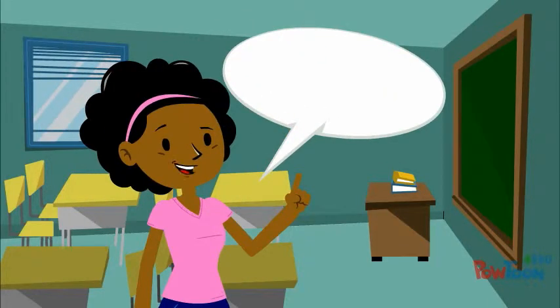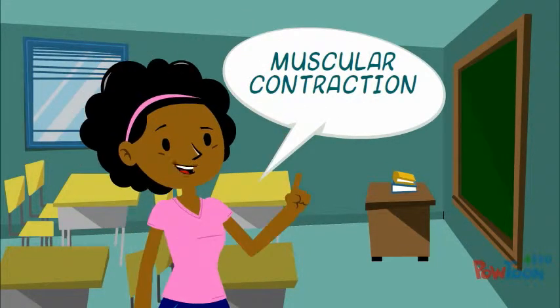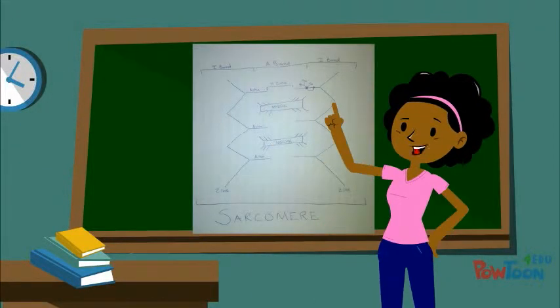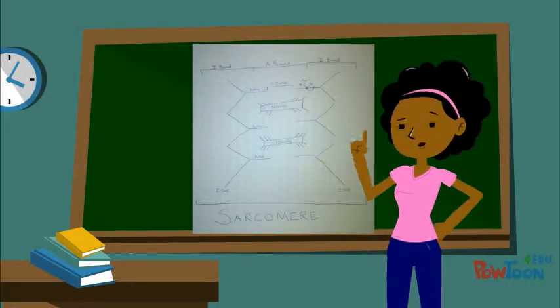Today we'll have a quick lesson over muscular contraction. This is a sarcomere, the smallest contractile unit of the muscle. The shortening of this unit causes muscular contraction.